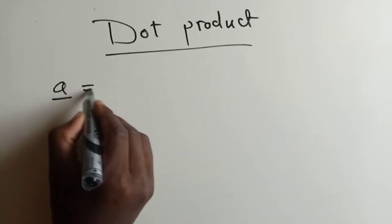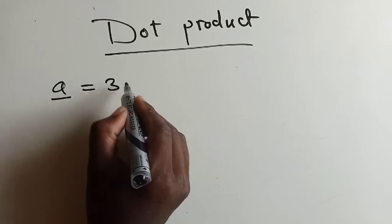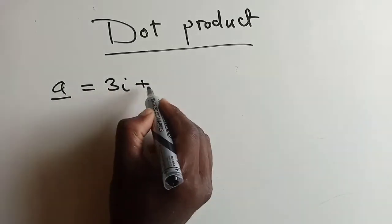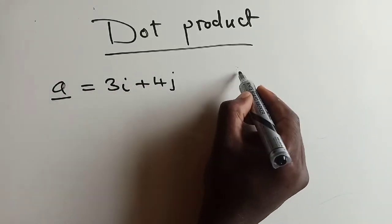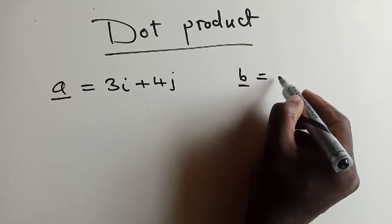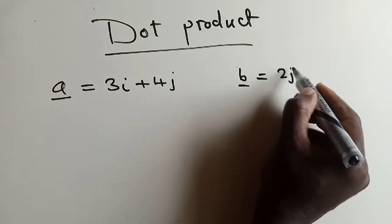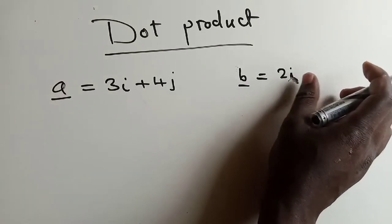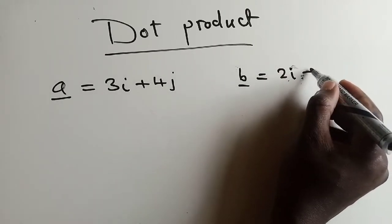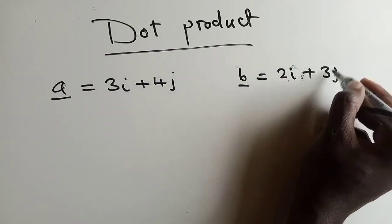So let's say we have two vectors. We have vector A, which is equal to 3I plus 4J. And vector B is equal to 2I plus 3J.